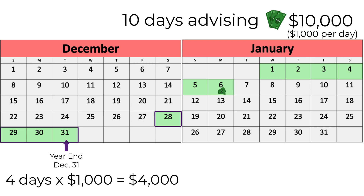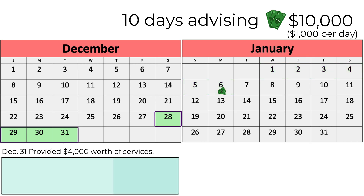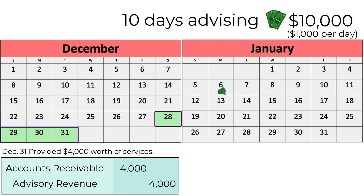To record this accrued revenue, we debit accounts receivable for $4,000 and credit advisory revenue for $4,000. We debit accounts receivable because we are owed that amount for the work that we have performed.